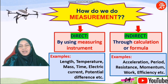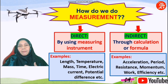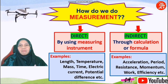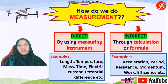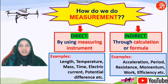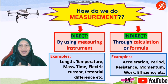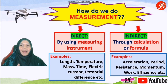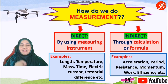How about examples of indirect measurement? They include acceleration, period, resistance, momentum, work, efficiency, and many more. These quantities cannot be obtained directly from an activity or experiment in the lab, but we can find them by applying a certain formula.